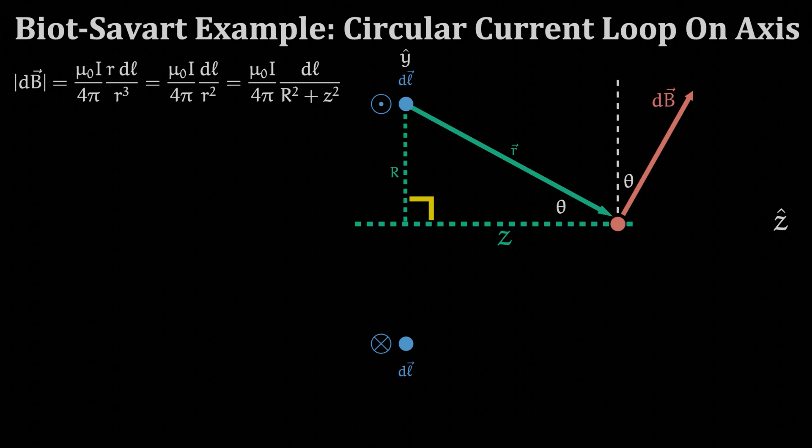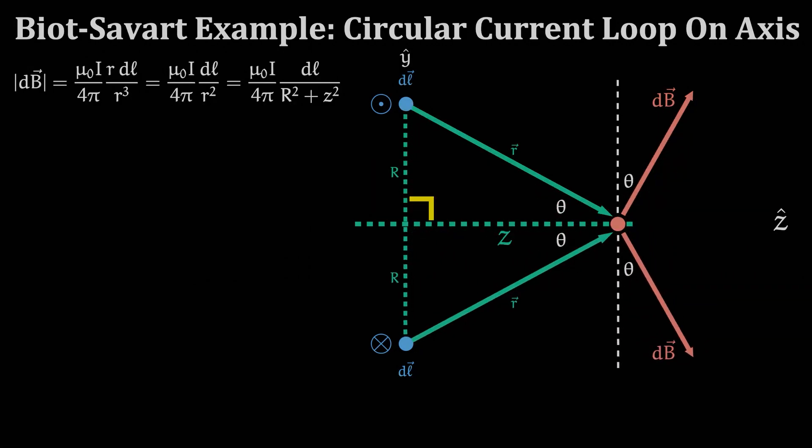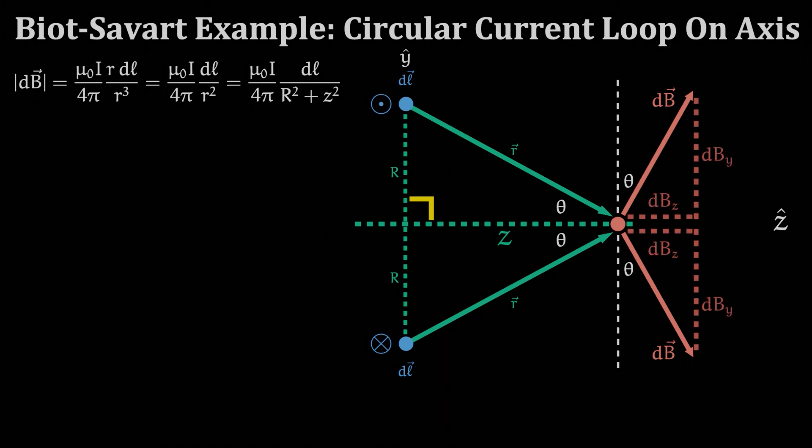If we do this same labeling process for the bottom current, the opposite half of the loop, we'll notice that we end up with two vector dB. This means their vector components in the y direction will cancel each other while their z components will add to each other.